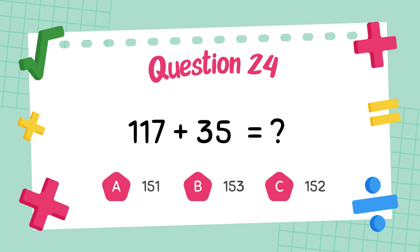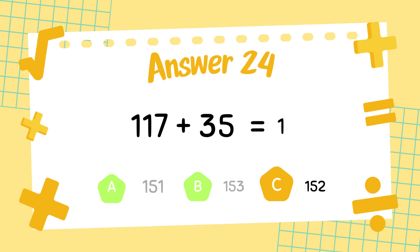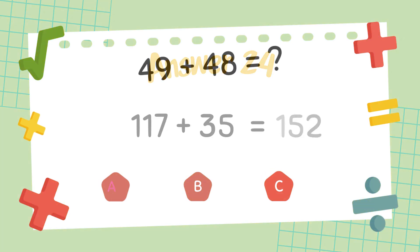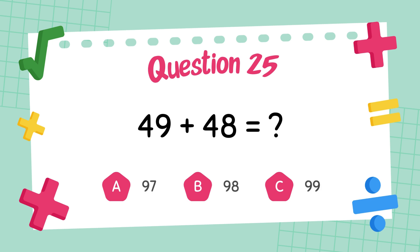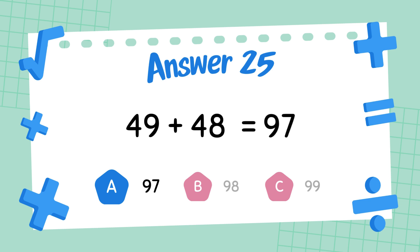What is 117 plus 35? The answer is 152. What is 49 plus 48? The answer is 97.